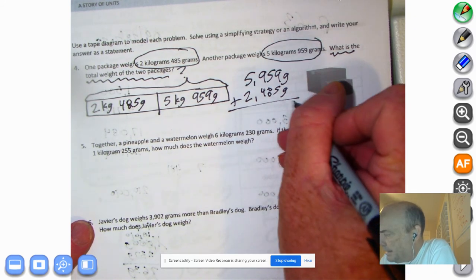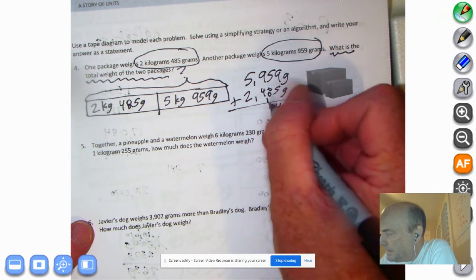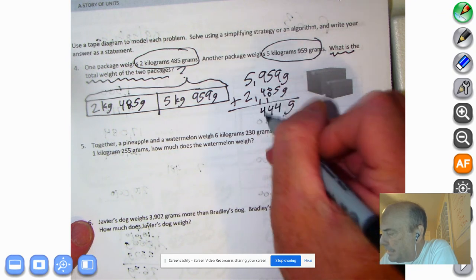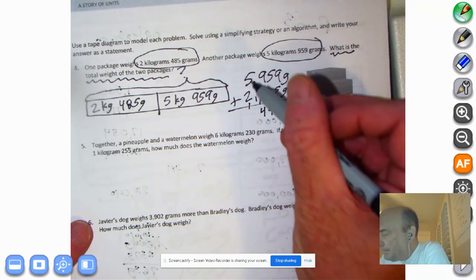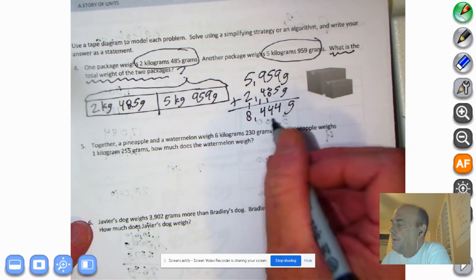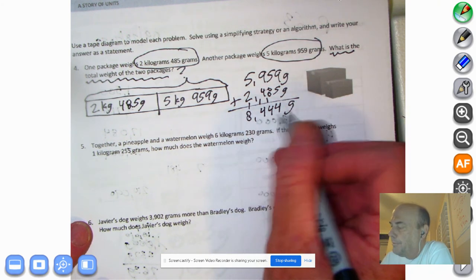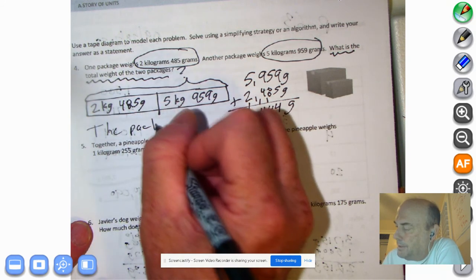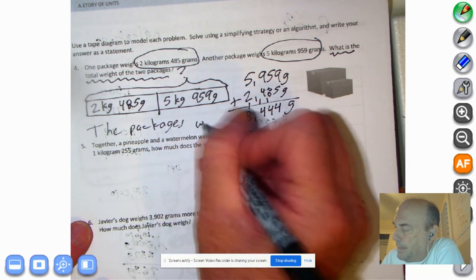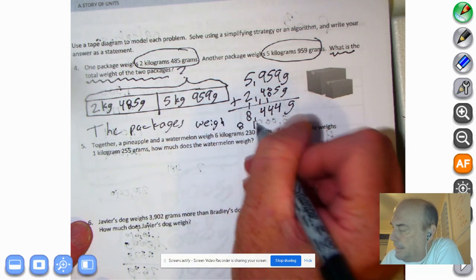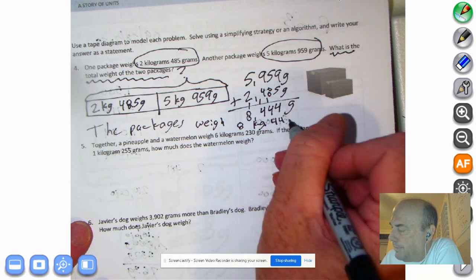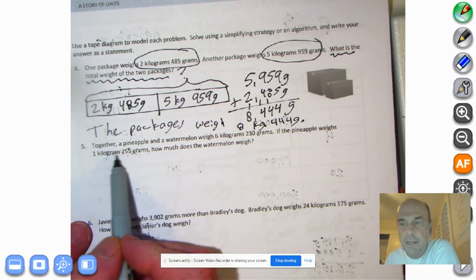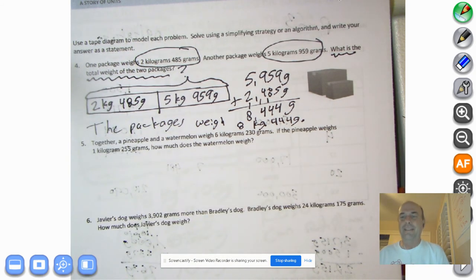And welcome back. Bring down the grams. 9 plus 5 is 14. 8 plus 1 is 9, plus the 5 is 14 again. 9 plus 1 is 10, plus 4 is 14 again. Wow. And then 5 plus 2 is 7, plus 1 is 8. We have 8,444 grams, or 8 kilograms, 444 grams. The packages weigh, W-E-I-G-H, 8 kilograms, 444 grams, period. And look at this. We read, we drew, we write. The RDW method. It's what Eureka Math is all about.